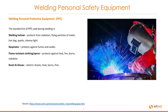Let's have a look at welding personal protective equipment, commonly known as PPE. The standard list of PPE used during welding includes: a welding helmet, which protects from radiation, flying particles of metal, hot slag, sparks and intense light; a respirator, which protects against fumes and oxides; flame retardant clothing and apron, which protects against heat, fire, burns and radiation; and a good pair of boots and leather gloves, which protect you from electric shocks, heat, burns and fires.